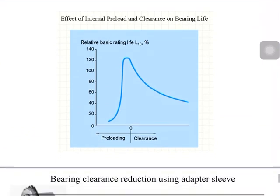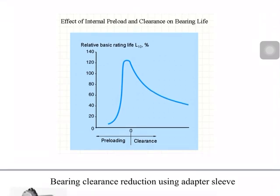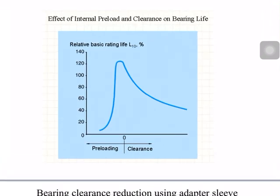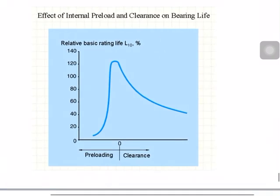The internal pre-load and clearance both significantly affect the operating life of a bearing. If you have higher clearance, the bearing life decreases. If you have excessive pre-load — that is, excessive negative clearance — the bearing life also decreases. You need to have the optimum condition: a very light pre-load, or during operation approximately zero clearance, to achieve higher bearing life.